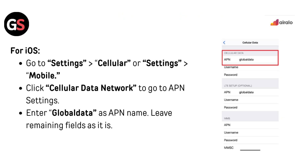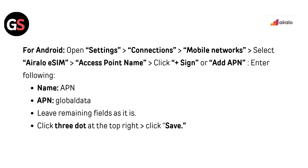For iOS, go to Settings then Cellular, or Settings then Mobile. Click Cellular Data Network to go to APN settings. Enter 'globaldata' as the APN name and leave the remaining fields as they are. For Android, open Settings and go to Connections or Mobile Networks.